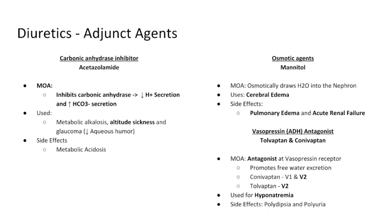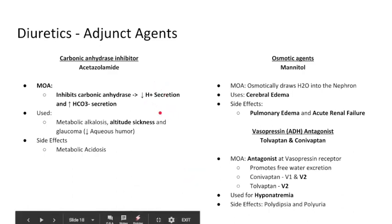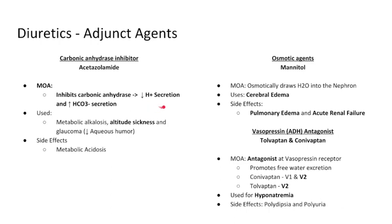Finally, our carbonic anhydrase inhibitor — acetazolamide. Carbonic anhydrase is part of the equation where water and CO2 with carbonic anhydrase gets converted into bicarb and hydrogen ions. In the kidney, by inhibiting carbonic anhydrase in the proximal convoluted tubule, we decrease our hydrogen ion (acid) secretion but increase our bicarb secretion. By increasing bicarb secretion, we actually cause a slight diuresis.